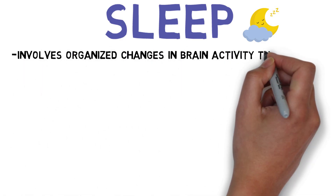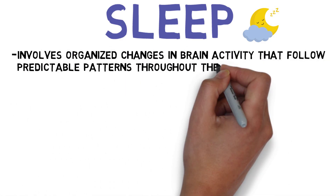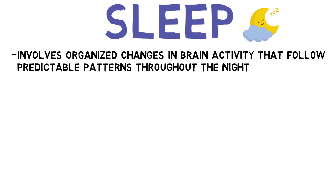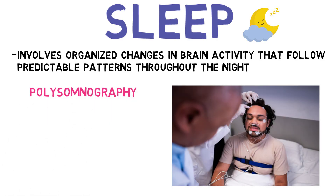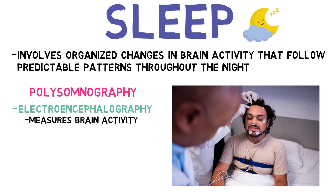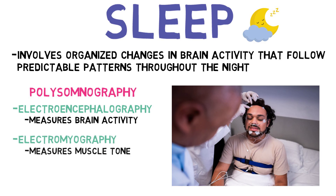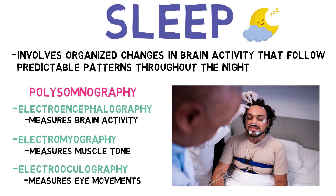Sleep is an essential biological process, and although it may seem like a state of inactivity, it involves highly organized changes in brain activity that follow predictable patterns throughout the night. These patterns are best observed using polysomnography, which combines electroencephalography to measure brain activity, electromyography to measure muscle tone, and electrooculography to measure eye movements. Using the results from these recordings, researchers have divided sleep into two major types: non-rapid eye movement sleep and rapid eye movement sleep, or REM sleep.